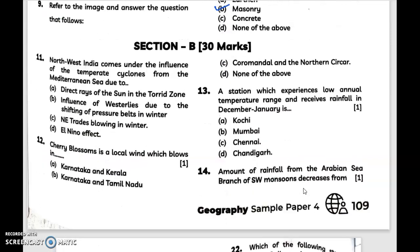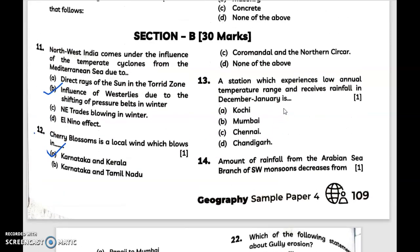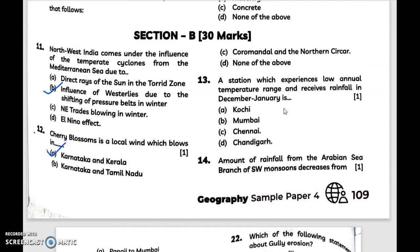Now Section B: Northwest India comes under the influence of the temperate cyclones from the Mediterranean Sea due to... answer is option B, influence of westerlies due to the shifting of pressure belts in winter. Question number 12: Cherry blossoms is a local wind which blows in... answer is option A. Moving to question 13: a station which experiences low annual temperature range and receives rainfall in December-January is C, Chennai.